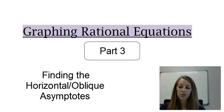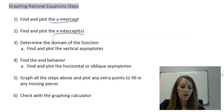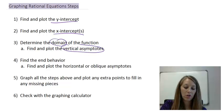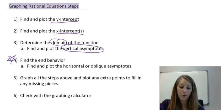So moving on with graphing rational functions, reviewing the steps one more time, we've covered how to do the y-intercepts, the x-intercepts, the domain, which really focuses on the vertical asymptotes. Now we're moving on to how to find the end behavior and how the horizontal or oblique asymptote fits in with that.